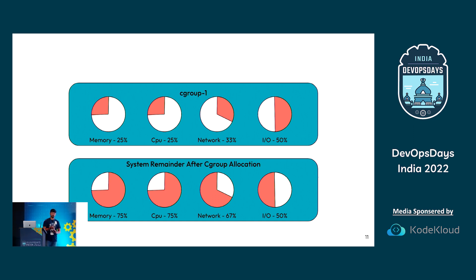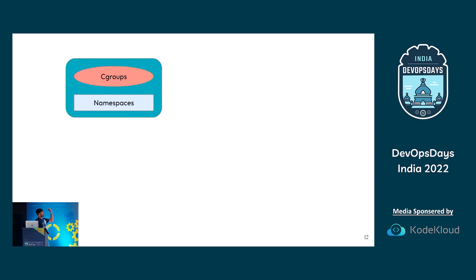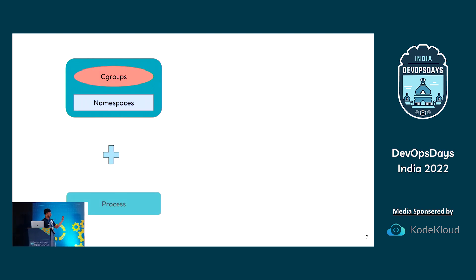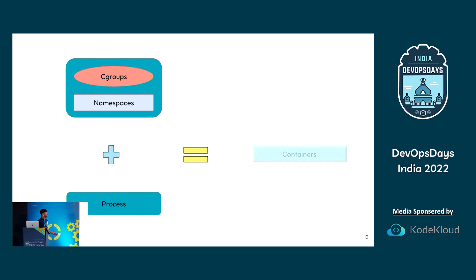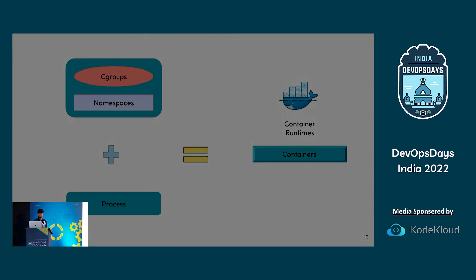Containers are made up of namespaces and cgroups. There is also something called overlay file system, but I'm not going to cover that. These are the two mechanisms, and when we run a process in the context of these two mechanisms, what we get are containers and container runtimes. For example, Docker under the hood uses these to make it easier for us to create namespaces and cgroups.